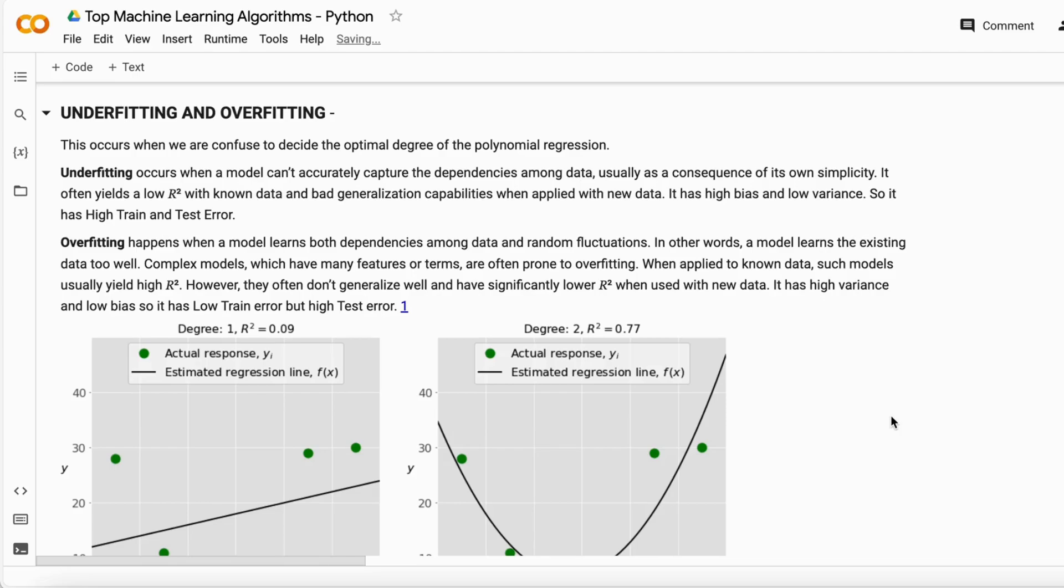Underfitting occurs when your machine learning model is too simple but your data set is too complex. In that way your model does not understand the relationships of the variables or the dependencies of the variable in the data correctly, that yields low accuracy of the machine learning model on the training data.